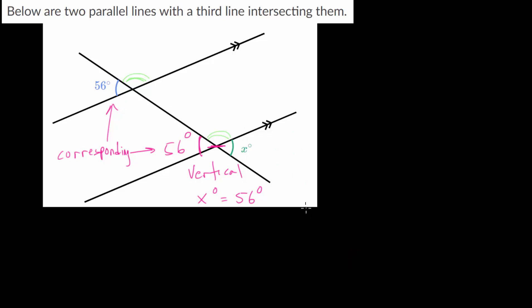Now, that's one approach to start with corresponding angles and then use vertical angles to prove that they are equal. But, this 56 degree angle and this x degree angle are known as alternate exterior angles.